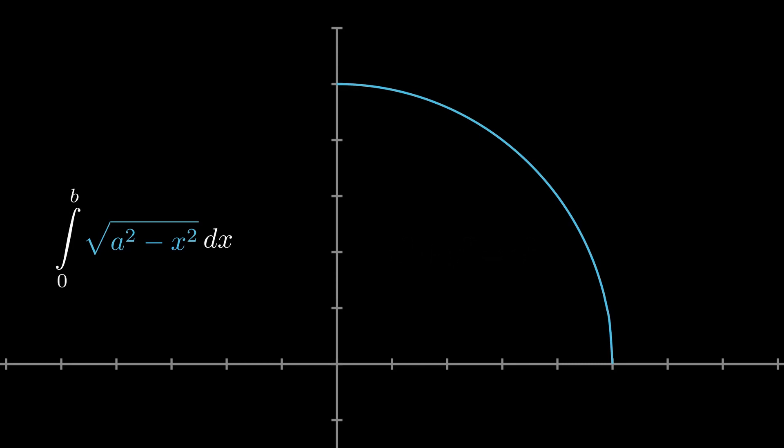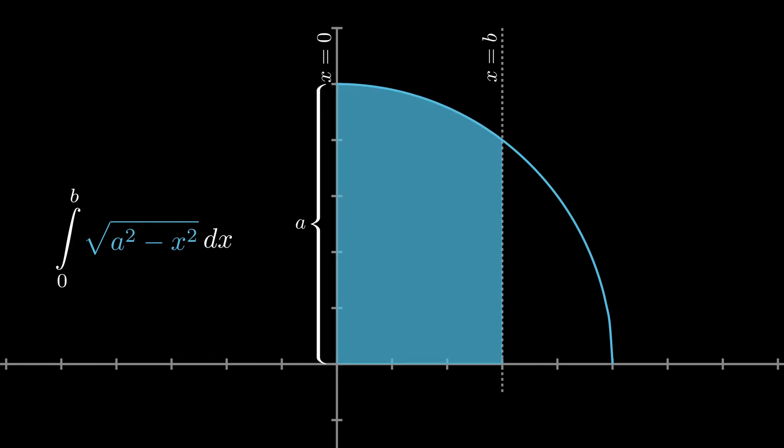And the integral is nothing but the area of the circle between the lines x equals zero and x equals b. Finding this area is almost trivial. The section that we are interested in comprises a right-angled triangle and a circular sector.